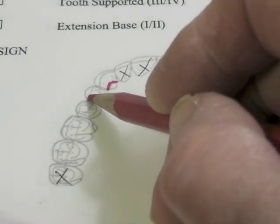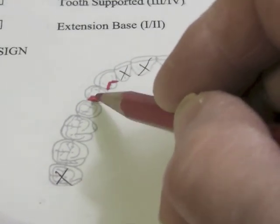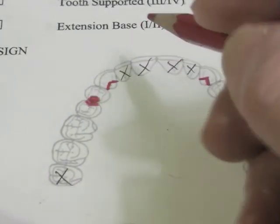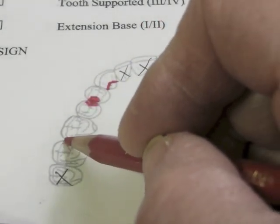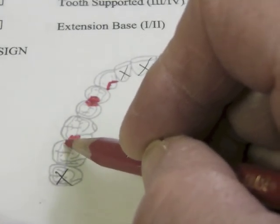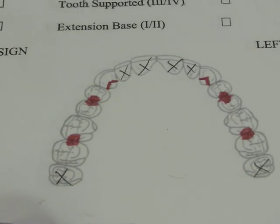We have to have a rest with every clasp assembly. You're going to have a direct retainer, a reciprocal component, and a minor connector. So in this case, an embrasure rest because we're bringing an arm between two teeth and we want to prevent that feeling of wedging.